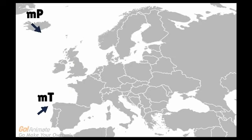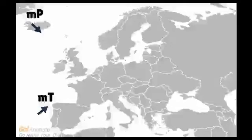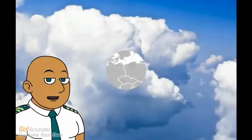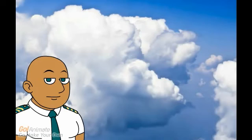Let's look at maritime polar air. The air has its source in the Greenland area. As the air moves south it is warmed from below and becomes unstable. This will produce convection, which creates cumulus clouds. When you know the qualities of an air mass, you can predict the weather.